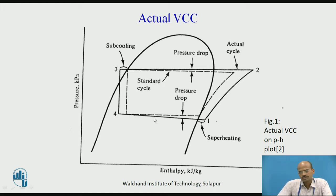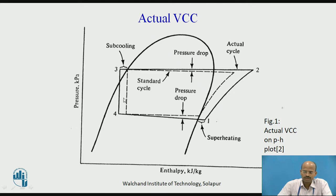In the previous sessions, we have studied the schematic diagram of Vapor Compression Cycle and shown VCC on a pH diagram. Now, if we consider practical considerations into account, then the dotted line representing the theoretical cycle will get modified into the actual one. In actual VCC, the pressure drop caused due to friction between the refrigerant and the tube wall is considered, along with the wire drawing process, the practical compression process, and the practical condensation process.